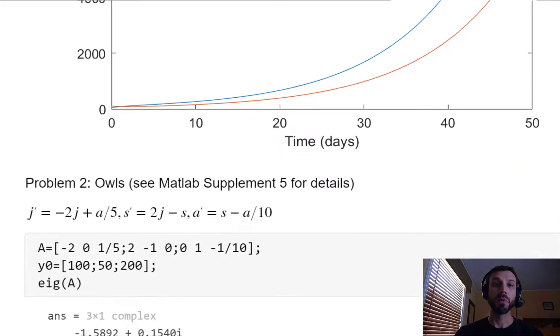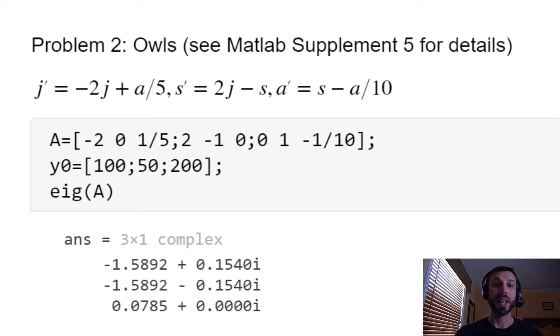As a second example we're going to look at a three population model to demonstrate what happens when you have more than two variables involved. For this we're going to use the owls population model, which you'll have to look at MATLAB supplement 5 for details of the setup. I highly encourage you to spend some time making sure that you know how to get this system of equations from the information given there. The set of differential equations here has three unknowns: J for juveniles, S for sub-adults, and A for adults. So our coefficient matrix correspondingly is a 3x3 matrix. The initial conditions is also a 3x1 vector. Notice that in this case a call to eig shows that there are actually three eigenvalues, two of which are complex conjugates and the third of which is a positive real number.